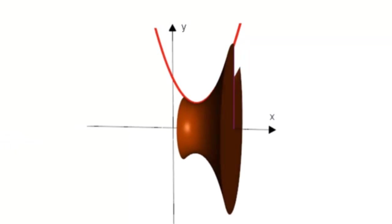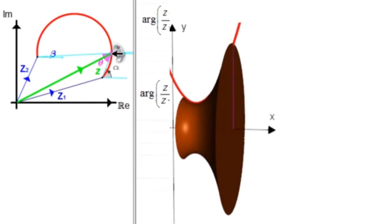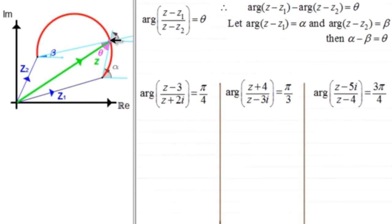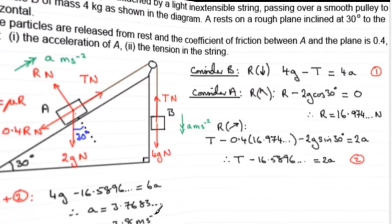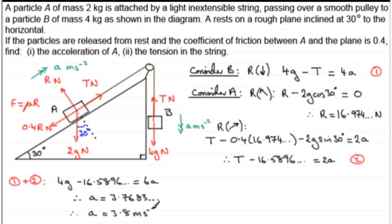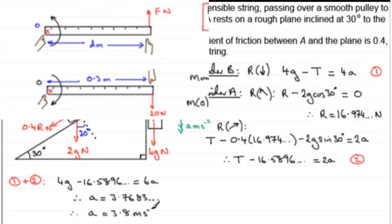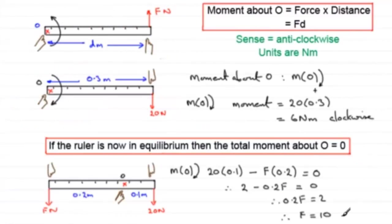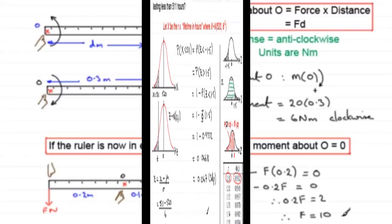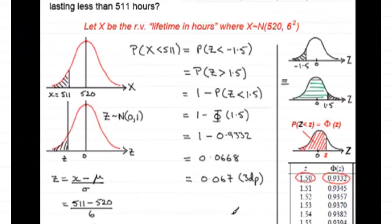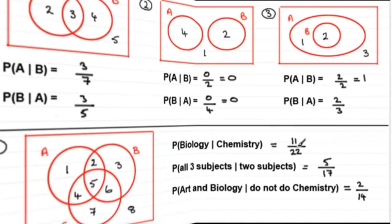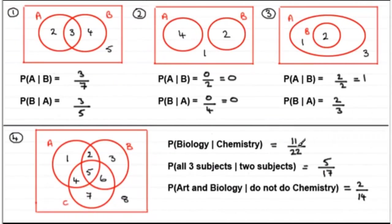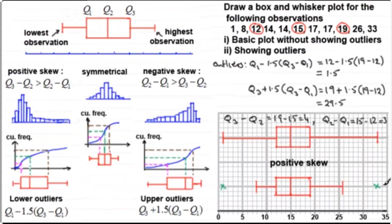Some of them are animated, like this one on volumes of revolution or this one on complex numbers, and it doesn't stop there. We've got mechanics here where we're looking at forces on particles or even moments. It might be that you're struggling with statistics like the normal distribution or conditional probability with Venn diagrams, and I've got ones on graphs and charts too.